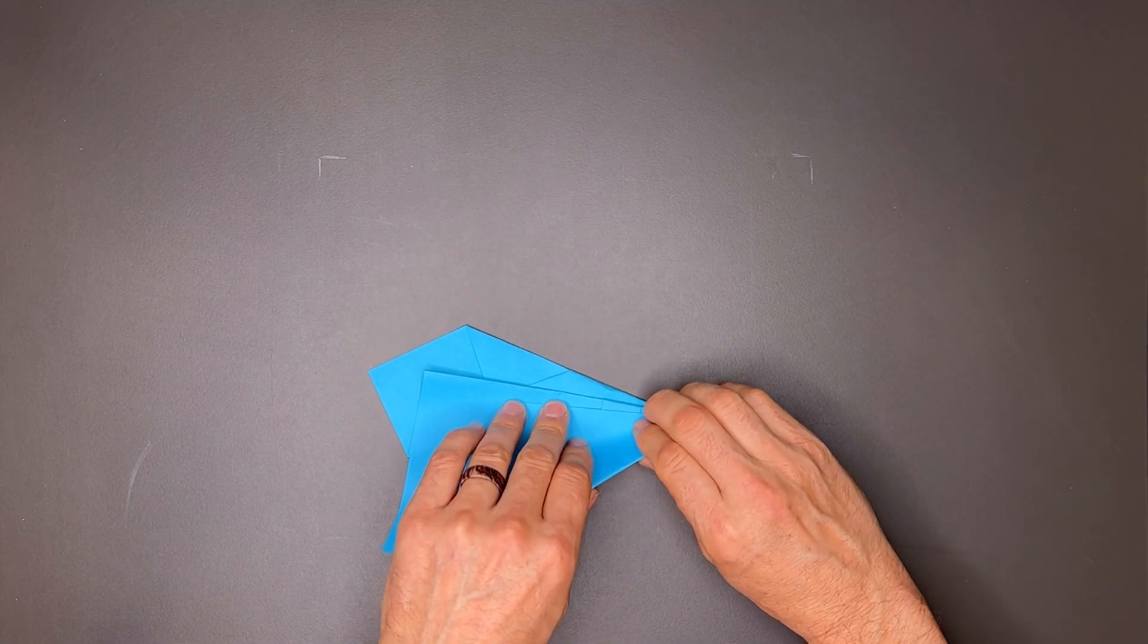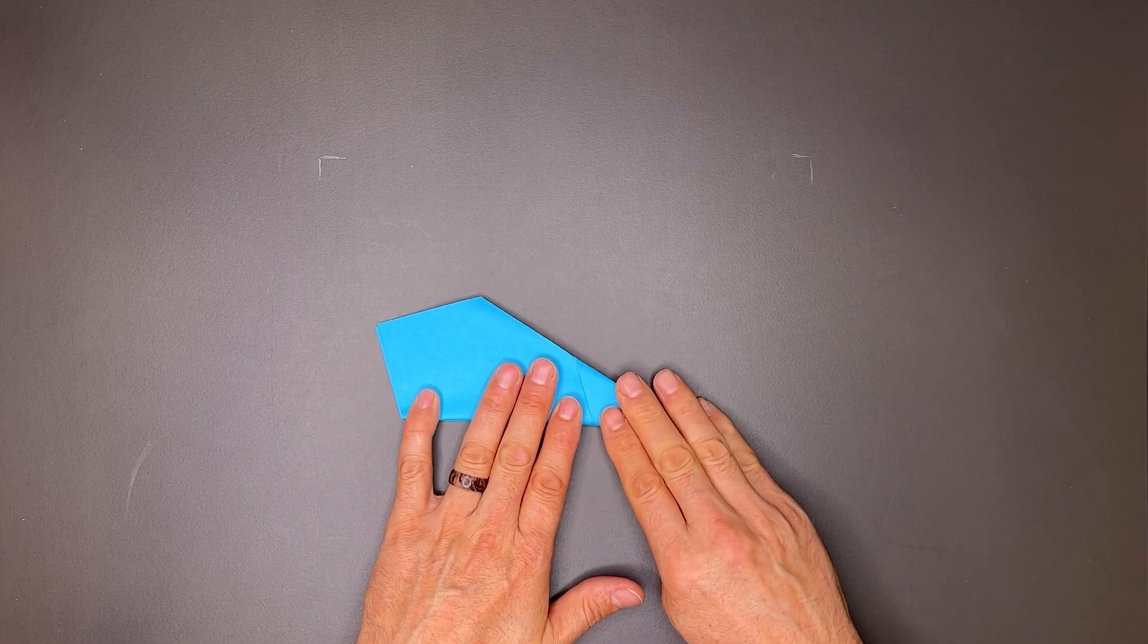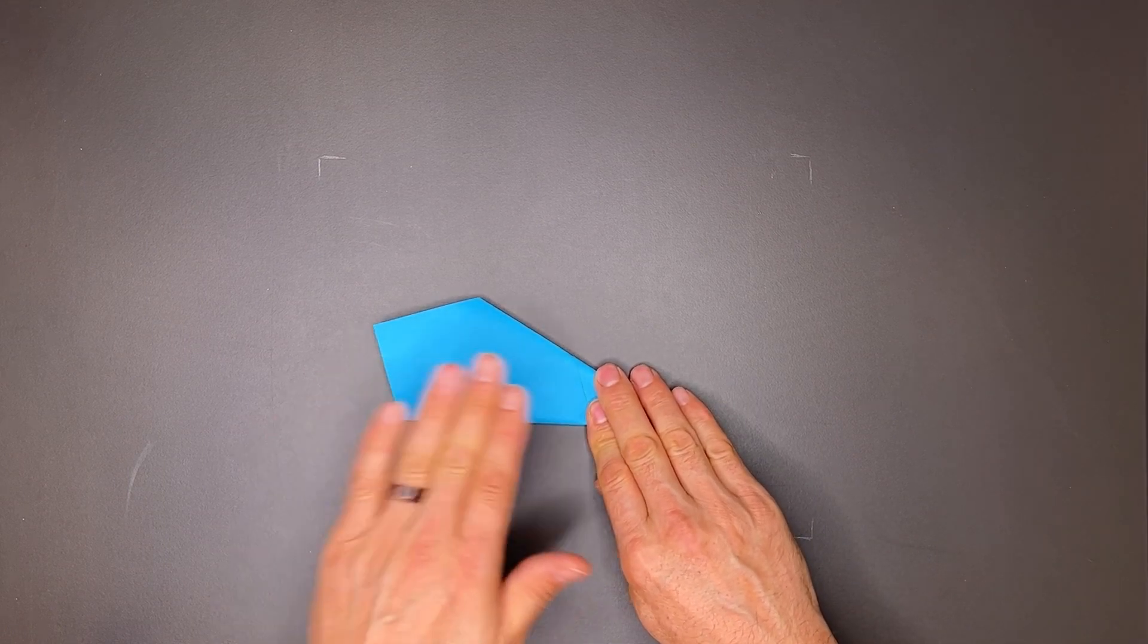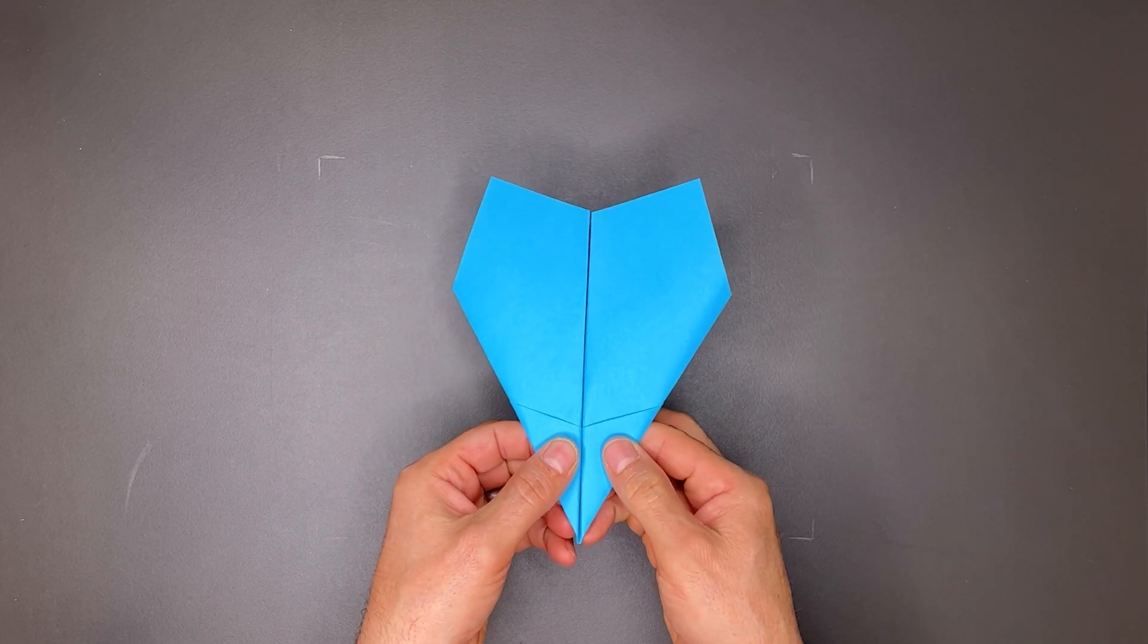And then we'll turn it over and do the same thing again, and we're just going to match the edges this time. Now you've got the basic shape of the plane.